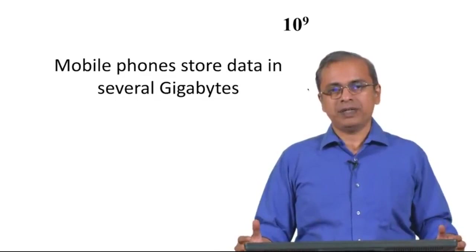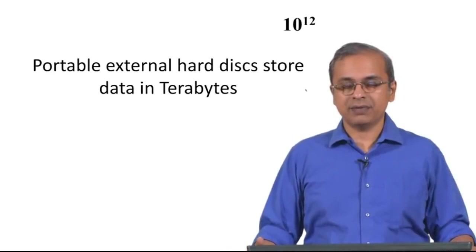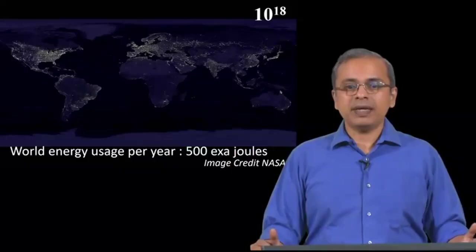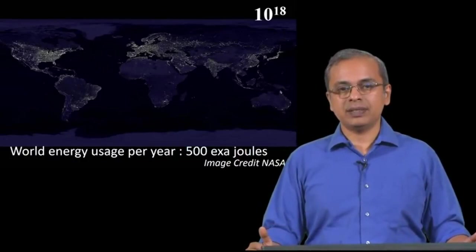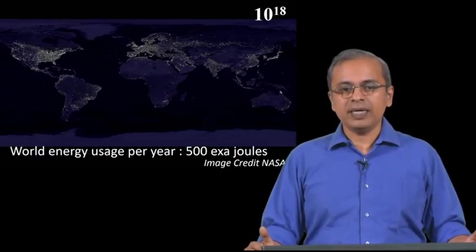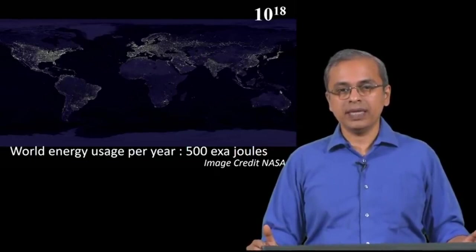Common place equipment using some aspect of this, you reach 10 power 12 and that is tera. Again 15, then we are looking at supercomputers. Today's supercomputers are at 18, that is a kind of quantity indicated with this prefix exa. The world today uses energy in the range of 500 exajoules.